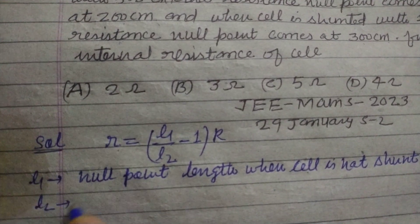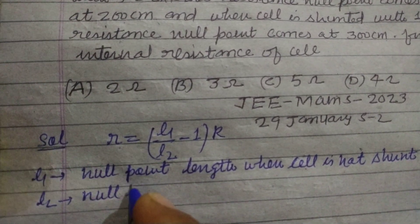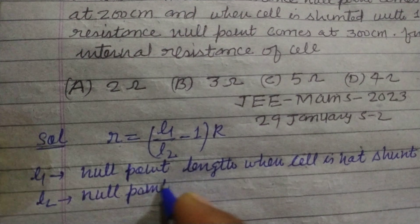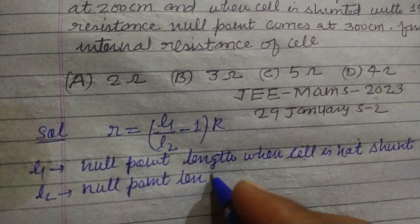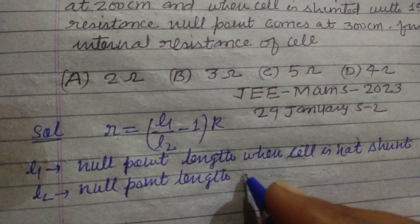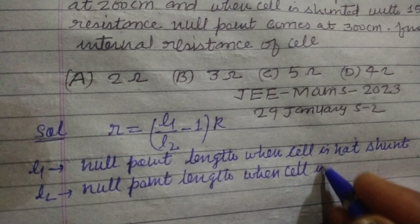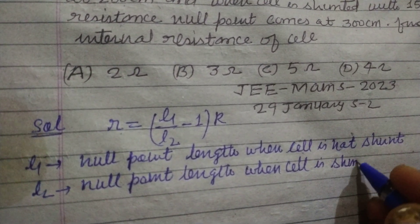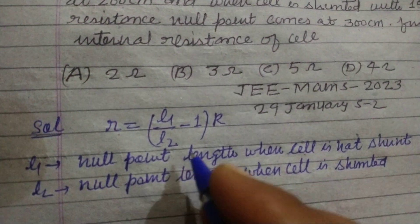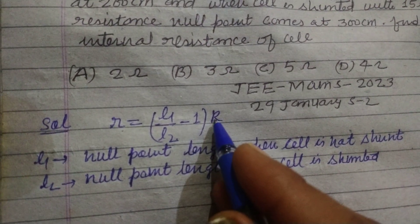L2 is null point length when cell is shunted, and R is external resistance.